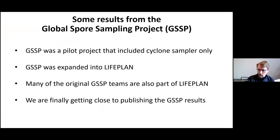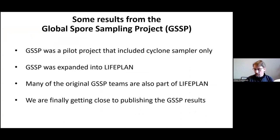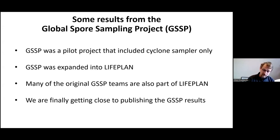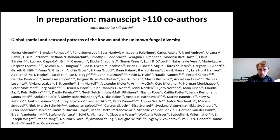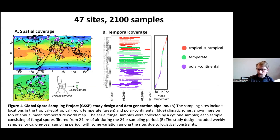GSSP was a pilot project prior to Lifeplan that included the cyclone sampler only, which we then expanded to the Lifeplan project. Many of the original GSSP teams are also part of Lifeplan. We are now getting close to publishing the GSSP results. We are preparing a manuscript on the global spatial and seasonal patterns of known and unknown fungal diversity with a little bit more than 100 co-authors — mainly the teams who collected the GSSP data — and we have included data from 47 sites.